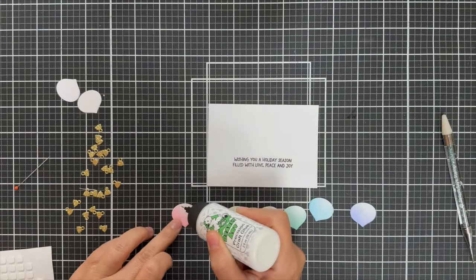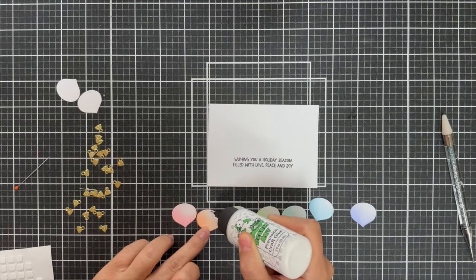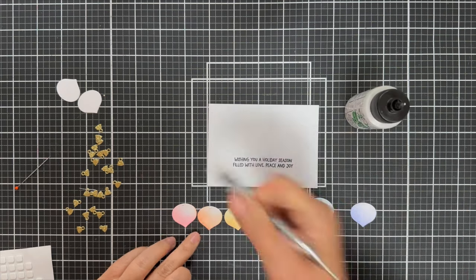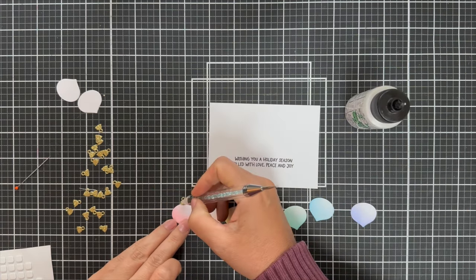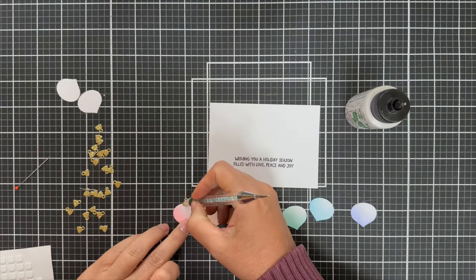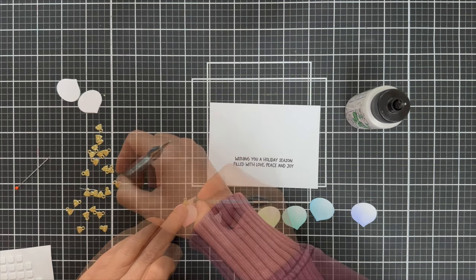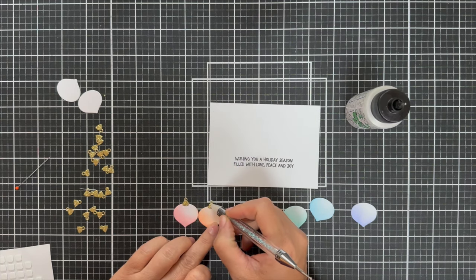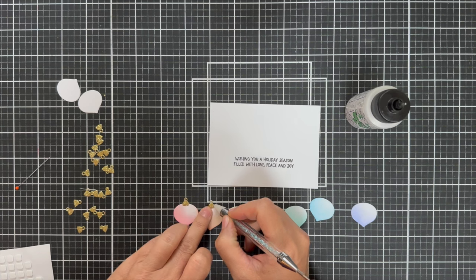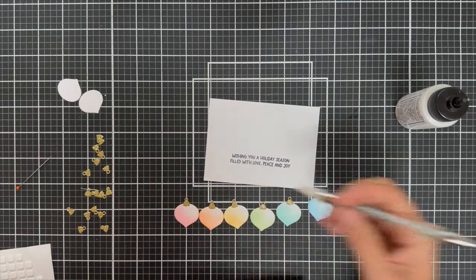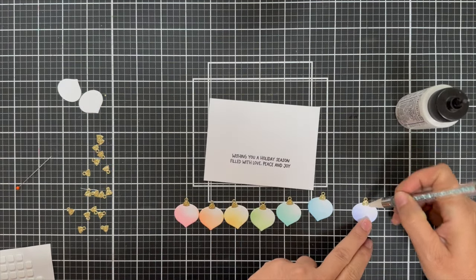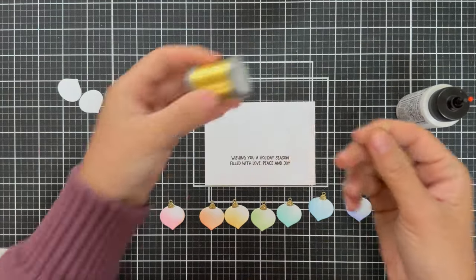You could also die cut these out of pattern paper. A lot of fun ways you can customize. Now, before I adhere them to my panel, I'm going to quickly pop on the little ornament toppers. I went ahead and cut another bunch out of that glitter gold cardstock. I think that looks so fun and shimmery for an ornament topper. I'm using just a little bit of liquid glue and I love this embellishment wand for detail work.